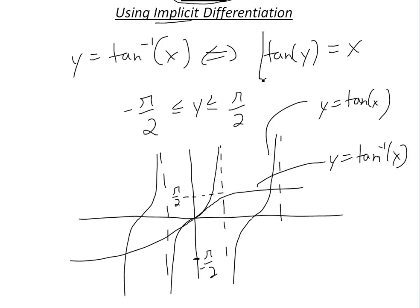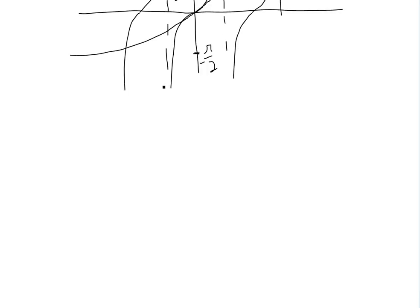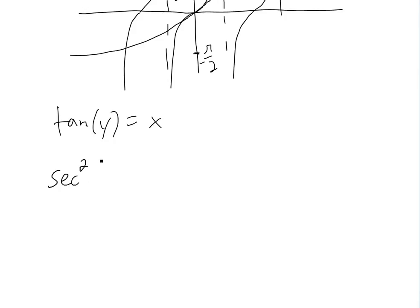To find the derivative of this, we look at the implicit form and apply implicit differentiation. So we have tan y equals x; take the derivative of both sides. Using the chain rule, the derivative of tan is secant squared, so we get secant squared y times y prime.